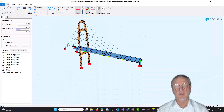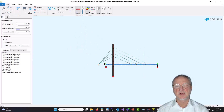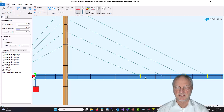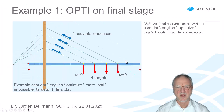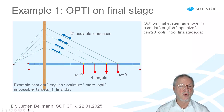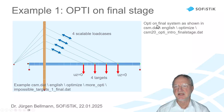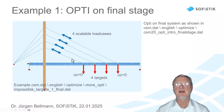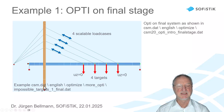Let's start with the first example. We have a nice and simple bridge with only four cables and, of course, four targets. For the four targets, UZ equals zero, we have four scalable load cases. How to manage this on the final system? You can see in the example CSM20 OPTI INTRO FINAL STAGE. This example is also in the example folder CSM English Optimize More Opti.